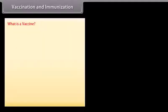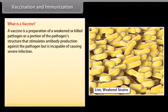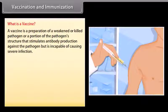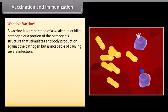What is a vaccine? A vaccine is a preparation of a weakened or killed pathogen, or a portion of the pathogen's structure, that stimulates antibody production against the pathogen but is incapable of causing severe infection.